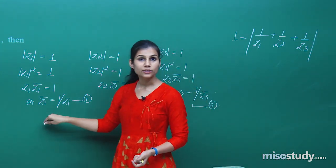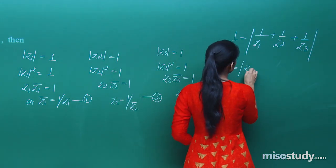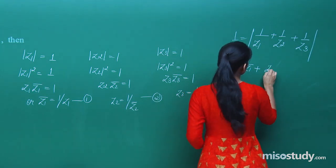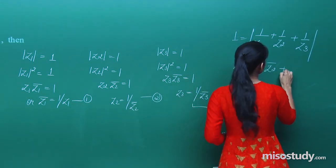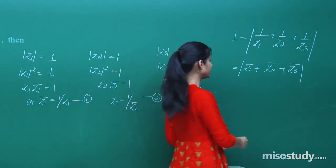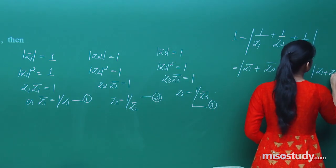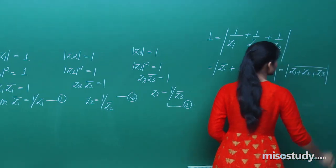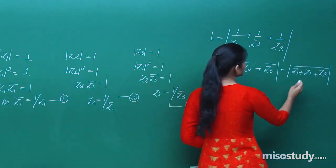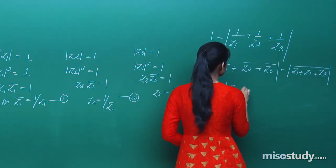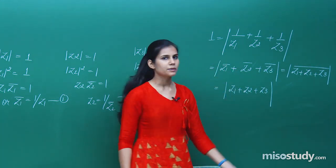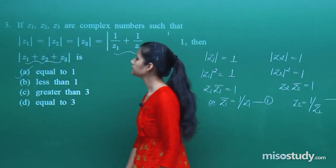You are given that 1 equals modulus of 1/z1 plus 1/z2 plus 1/z3. But 1/z1 is actually z1 bar, 1/z2 is z2 bar, and 1/z3 is z3 bar. You know that the conjugate of a sum is the sum of individual conjugates, so z1 bar plus z2 bar plus z3 bar equals the conjugate of z1 plus z2 plus z3. And since the modulus of a complex number equals the modulus of its conjugate, the modulus of z1 plus z2 plus z3 comes out to be exactly 1.